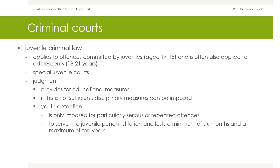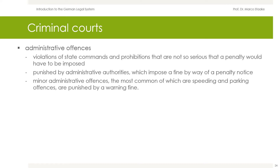Administrative offenses are to be distinguished from criminal offenses. These are violations of state commands and prohibitions that are not so serious that a criminal penalty would have to be imposed. They are punished by administrative authorities, which impose a fine by way of a penalty notice. Minor administrative offenses — the most common of which are speeding and parking offenses — are punished by a warning fine.